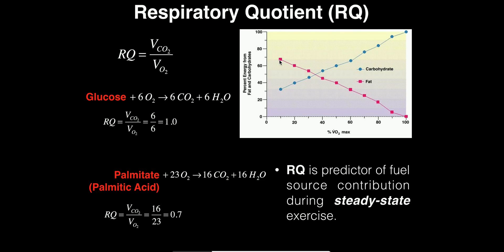There are two things you should take from this video. One is that the respiratory quotient is a great predictor of the contribution from different fuel sources to steady state exercise. Number two, you can look at the value of RQ to determine what the predominant fuel source might be. If I measured somebody's RQ in the lab and it came out to be 0.9 — fairly close to 1 — that would indicate a fairly high exercise intensity, because at high intensities we have a higher percent contribution from carbohydrate than fat. If I measured someone's RQ and it was 0.75, closer to 0.7 which is indicative of fatty acid metabolism, that means a higher degree of fatty acid metabolism than carbohydrate, indicating a low exercise intensity.